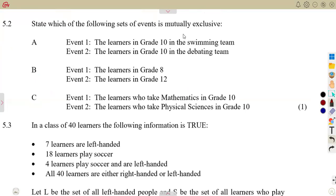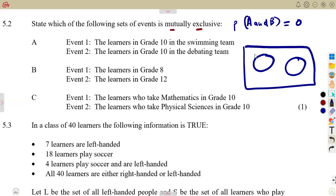5.2: state which of the following sets of events is mutually exclusive, meaning the probability of two events happening simultaneously is impossible — A and B cannot happen at the same time, so there is no intersection. For event A: learners in grade 10 in the swimming team and learners in grade 10 in the debating team — it's possible someone in grade 10 can be in both, so there is an intersection and they are not mutually exclusive.